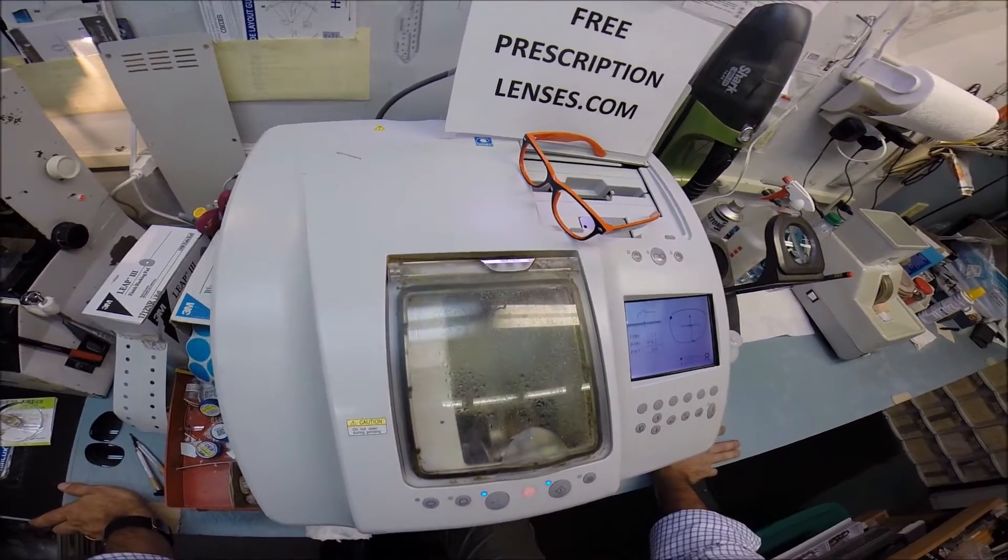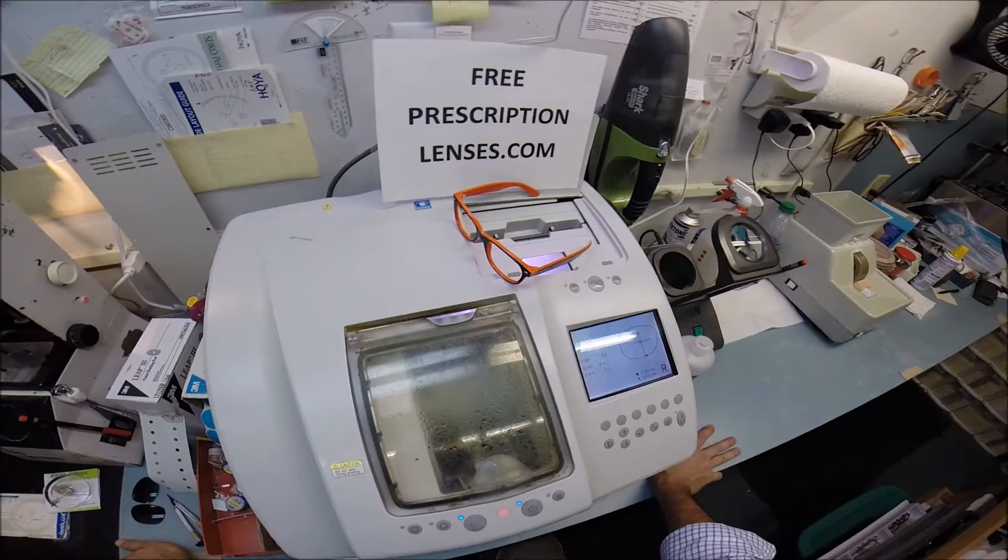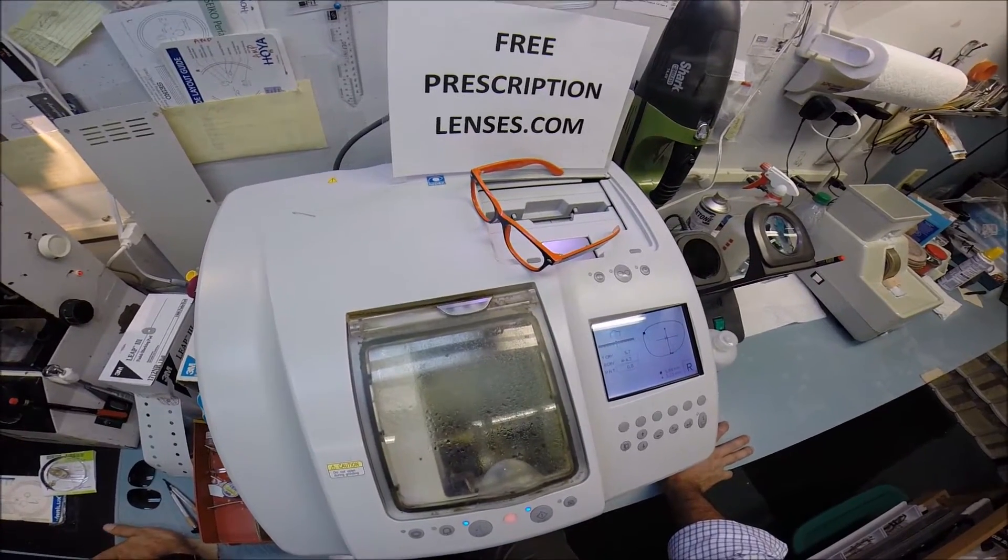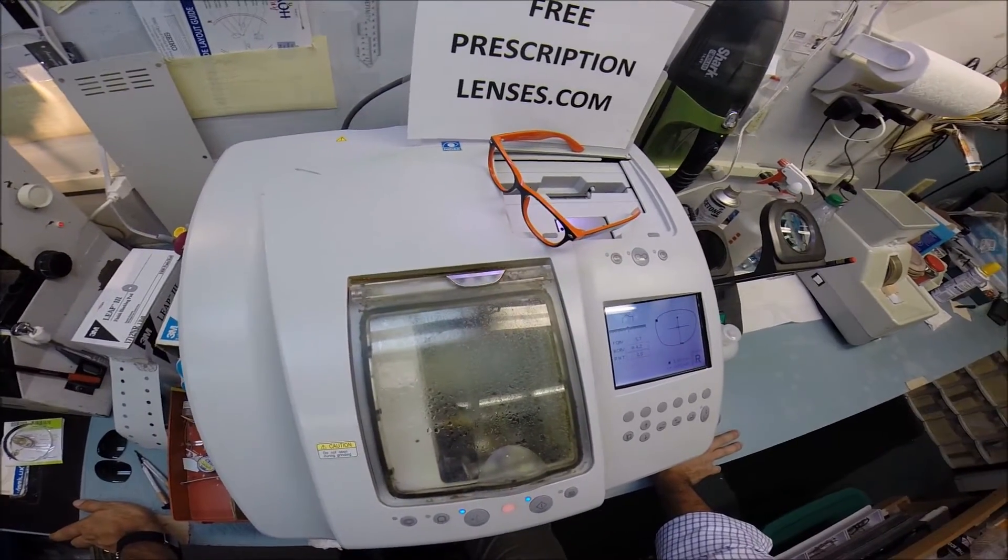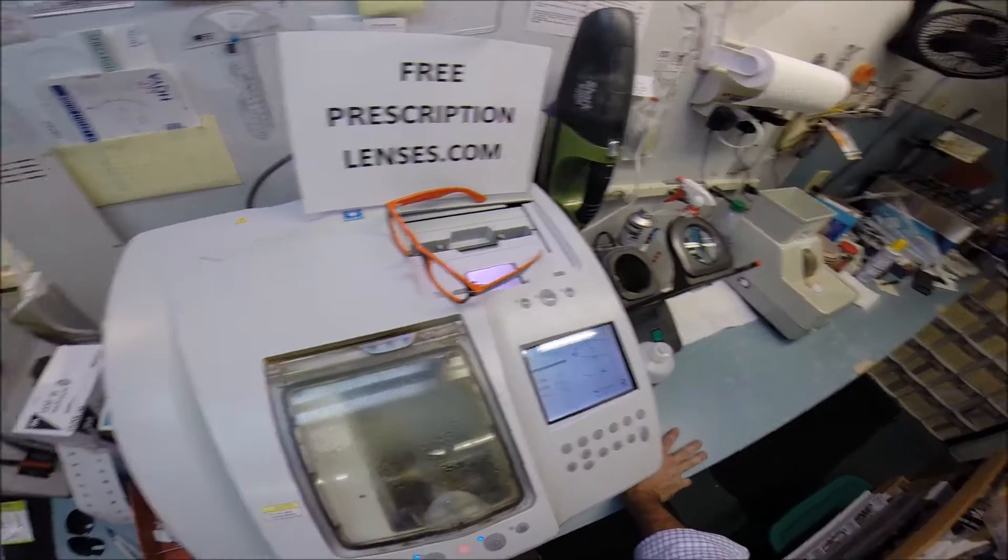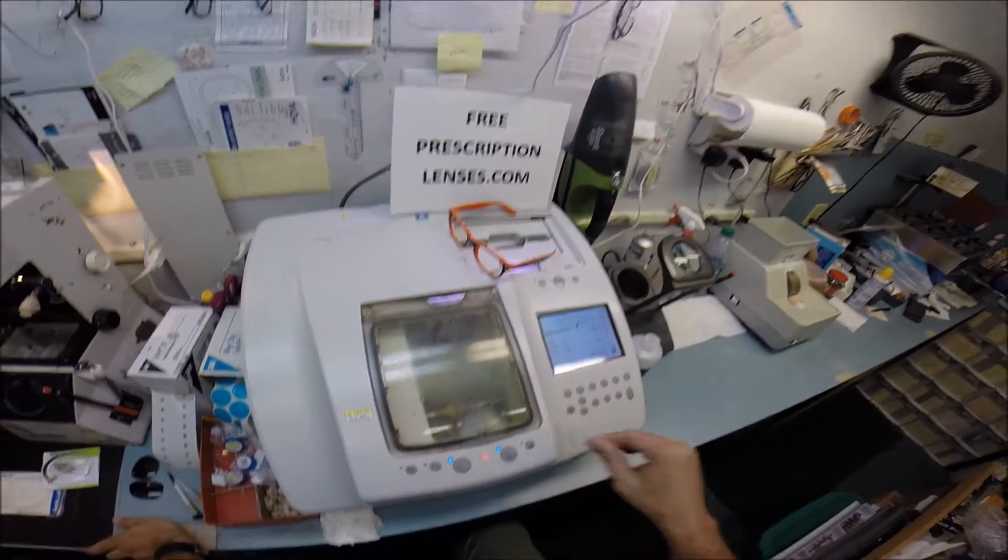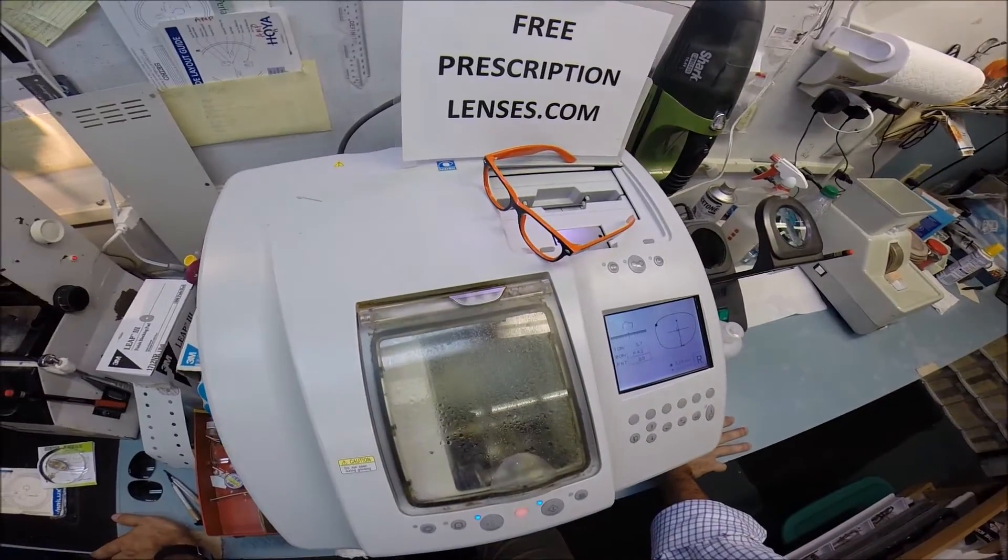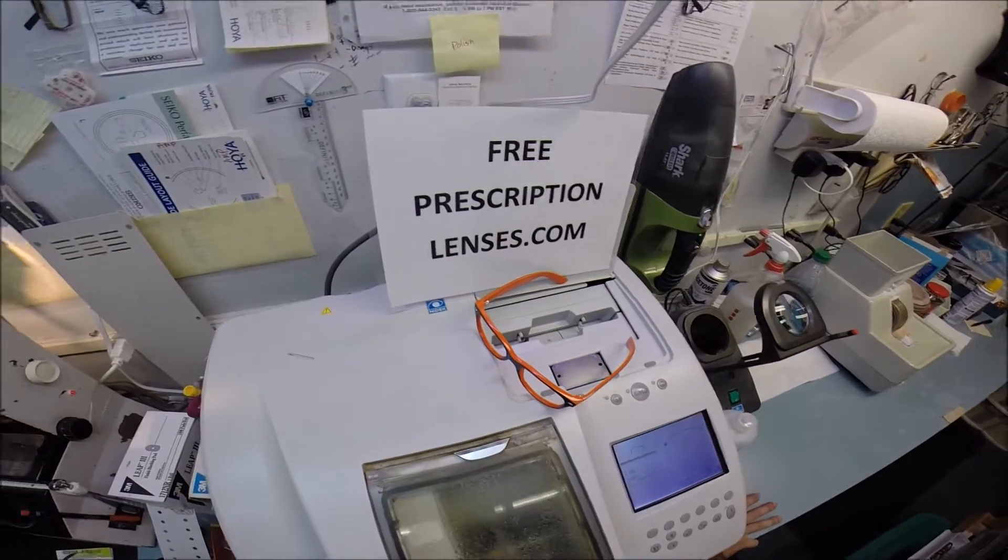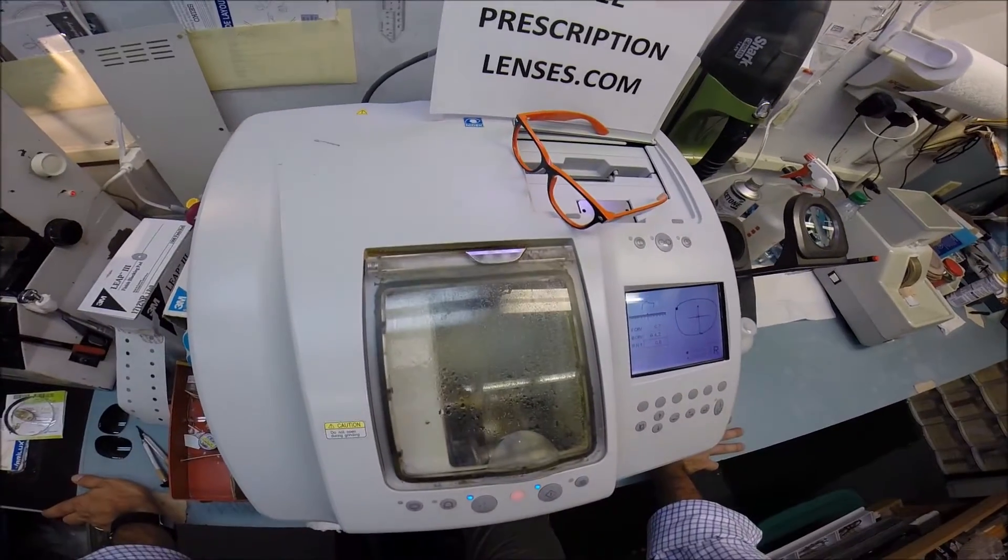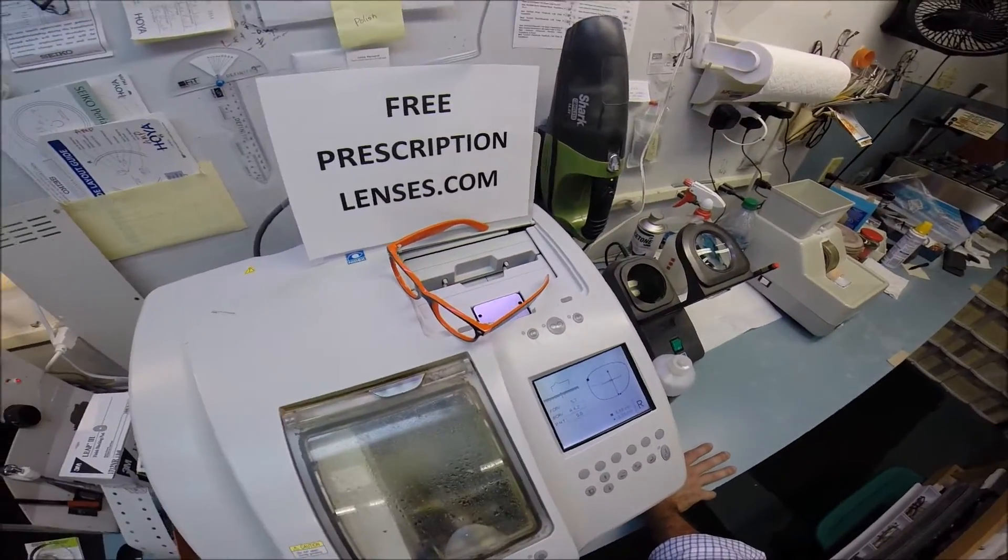If you have vision insurance or flex dollars and you want to wear something cool and funky, my receipt has my federal ID tax number on there so you can get reimbursed from your insurance company or health savings account flex dollars. Of course, that works here in America. I don't know what it's like in Canada with socialized healthcare.